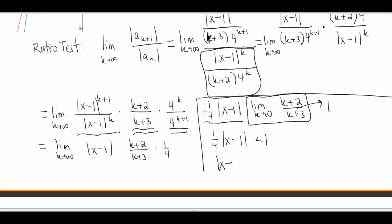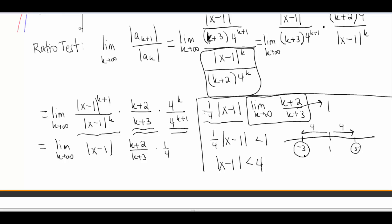So the absolute value of x minus 1 must be less than 4. Let's make ourselves a number line and stick 1 in here. We're going to go 4 to the left, which leaves us at negative 3 — not a big surprise, that's what we saw in our graph. And if we go 4 to the right, that's going to take us to 5. I said it looked like between 4 and 5 something funky was going on. So now we actually have to test these two values and see whether our series converges or diverges at those specific values.